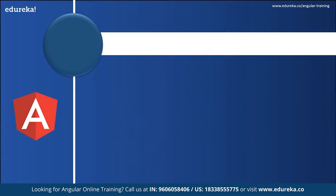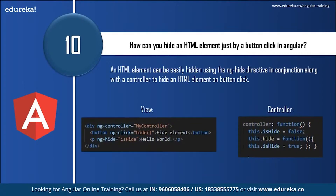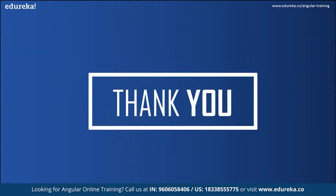The final question: how can you hide an HTML element with a button click in Angular? An HTML element can be easily hidden using the ng-hide directive in conjunction with a controller. To hide an HTML element on button click, the view goes into the HTML file of your component and the controller goes into the TypeScript file of your component. That brings us to the end of this session — I hope this video was useful and covered all the interview questions frequently asked in Angular interviews. Best of luck and happy learning!